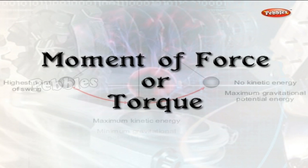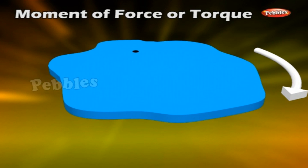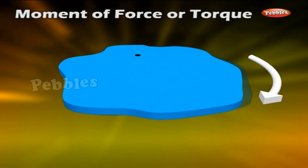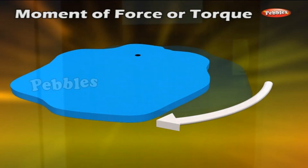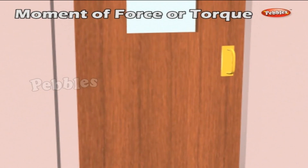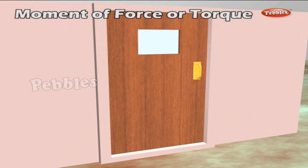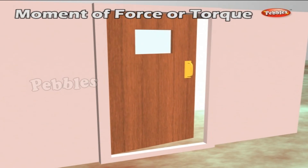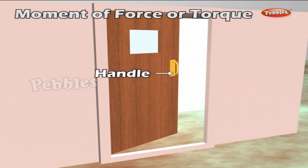Just as force produces a linear acceleration in translatory motion, the quantity which produces angular acceleration during rotation is called torque. To understand torque, consider a body capable of rotation about an axis passing through its hinges. A force is applied to rotate the body — the larger the force, the more is its turning effect. However, it is not force alone that determines the turning effect; a door can be turned much more easily when the force is applied near its edge.